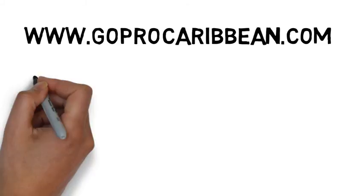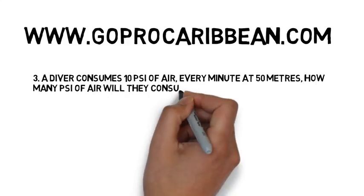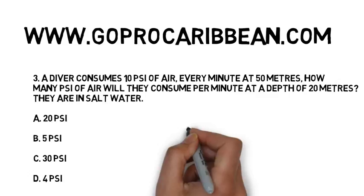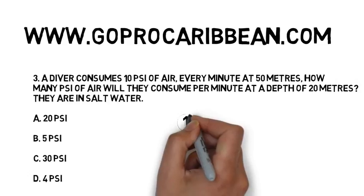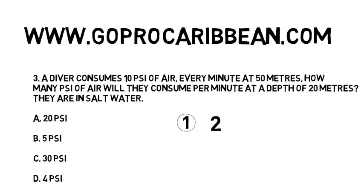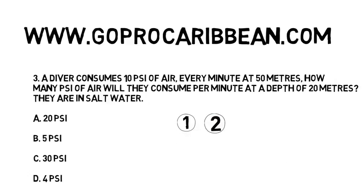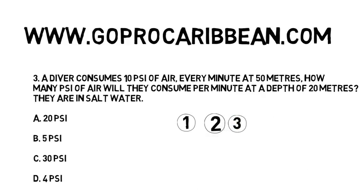What we're looking at here is questions where we move from one depth to another depth. More complicated than questions that are asking about a depth compared to the surface, but not a lot more complicated. The 1-2-3 process that you learnt in physics part one can still be applied, we just need to do it twice. In the first round we work out what would happen to that object if it was at the surface, and then in the second round we work out what would happen to that object at the second depth given to us in the question.